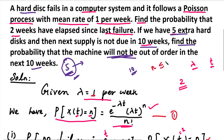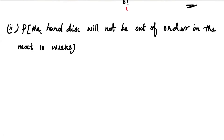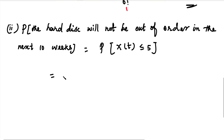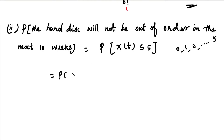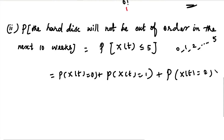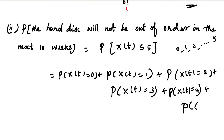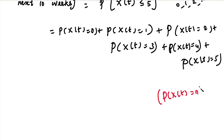The machine will not be out of order if the number of hard disk failures is less than or equal to 5. So we need P(X(t) ≤ 5). This equals P(X=0) + P(X=1) + P(X=2) + P(X=3) + P(X=4) + P(X=5). The formula is P(X(t) = n) = e^(minus lambda t) times (lambda t)^n divided by n factorial.